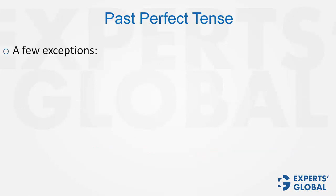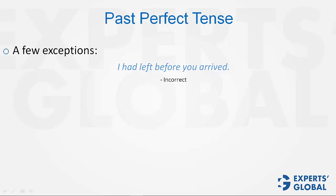However, there are some exceptions to the usage of past perfect tense. Look at this sentence: 'I had left before you arrived.' One may think that there are two actions — I leaving and you arriving — and I leaving happens first, and therefore the usage of past perfect tense is correct. But this is not correct, because the term 'before' already specifies which action happened first, and therefore the usage of past perfect tense would be redundant. The correct usage is: 'I left before you arrived.'